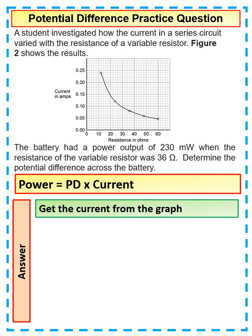We know that the resistance is 36 ohms, so it's about there. You'd go up and just read across from your graph to get what the current is. We can see there that the current is 0.08 amps.